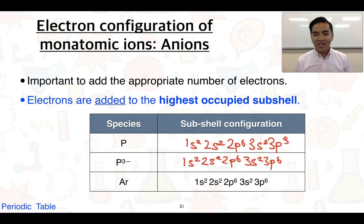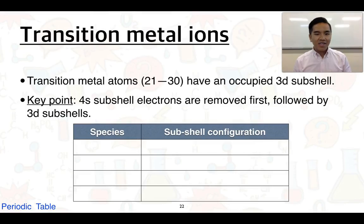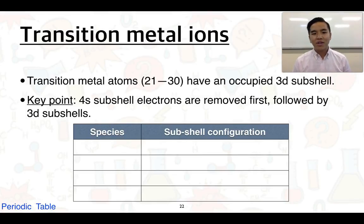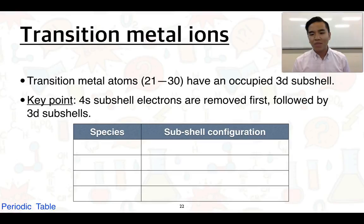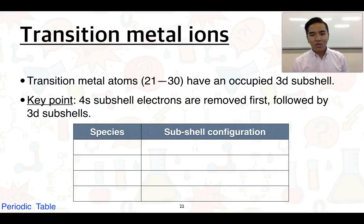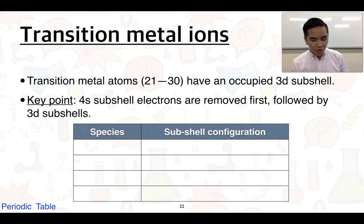The last thing we're going to talk about are transition metals, because they do something a little bit different. With transition metals — elements 21 to 30 — they have an additional 3d subshell that some other period three elements don't have. The key point is that when they lose electrons, and keep in mind these are metals so metals generally lose electrons, they will lose the electrons from the 4s subshell before they remove electrons from the 3d.